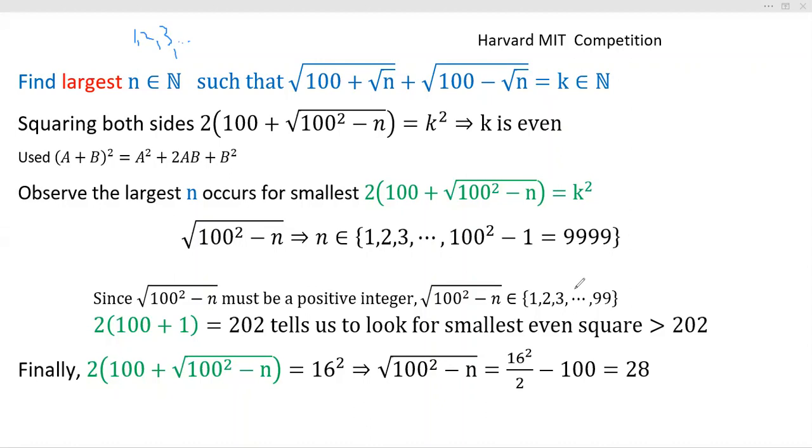Since we want n to be the largest, it's clear that this expression has to be the smallest it can be—this entire expression right here—and it also has to be a square. So what I do is take the low end of these numbers and place it right here: 1.